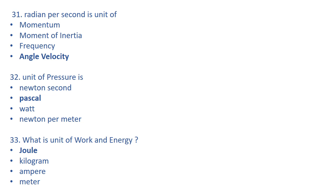Radian per second is the unit of angular velocity. Momentum is the product of mass and velocity. Moment of inertia has units of millimeter to the power 4. Frequency's unit is hertz. Since radian appears in angular velocity, you can directly match the answer — angular velocity is correct.